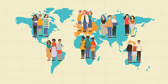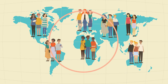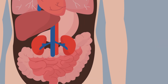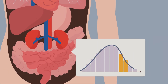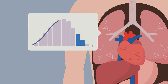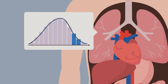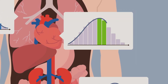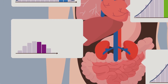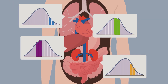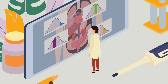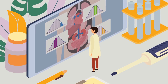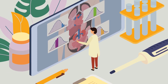In some countries, polygenic risk scores are already being piloted in healthcare systems. In the near future, polygenic risk scores could be another personalized factor in assessing risk for complex diseases. And from one genotyping test, polygenic risk scores could be calculated across many different diseases for an individual. How will polygenic risk scores benefit your disease area of interest?